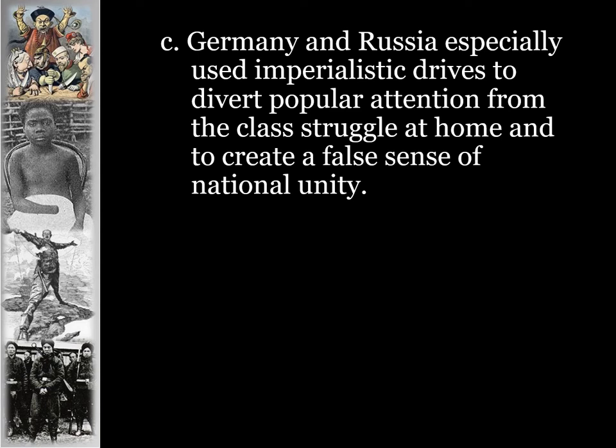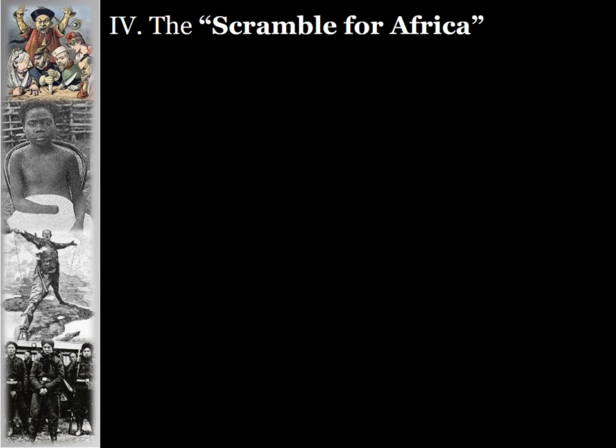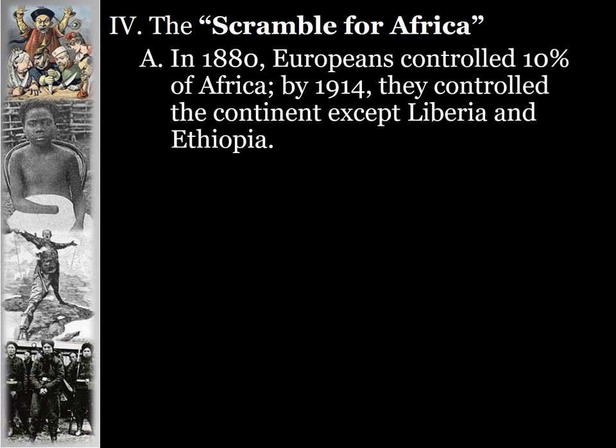Germany and Russia especially used imperialistic drives to divert popular attention at home from class struggles and to create a false sense of national unity. This new wave of imperialism happened mostly in Africa and Asia. Africa is sometimes referred to as the 'scramble for Africa' — European nations scrambling to gain territory in Africa and outdo one another while gaining control of resources for their industries, and hoping to find new markets.